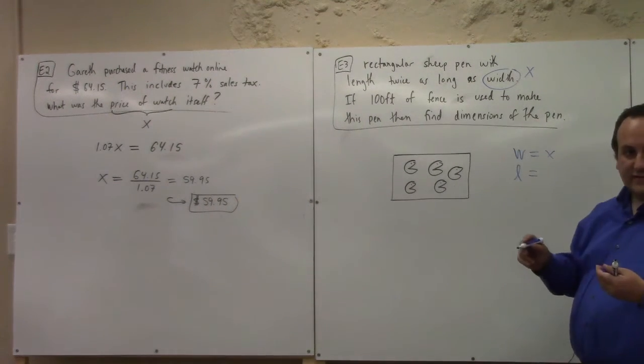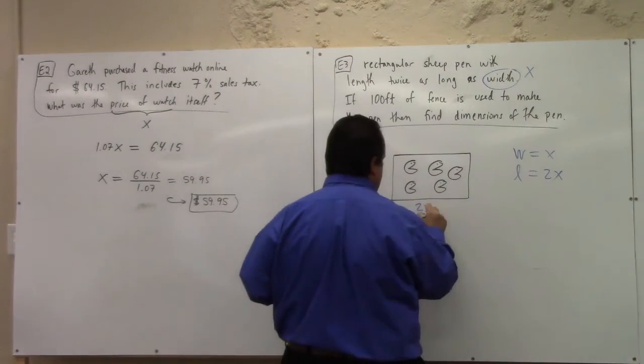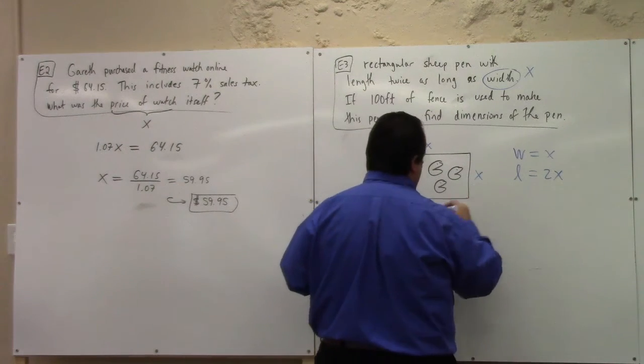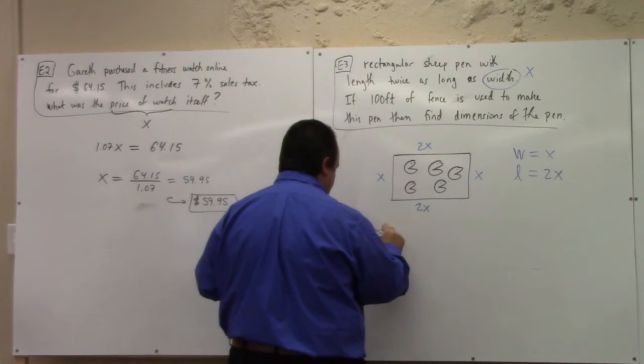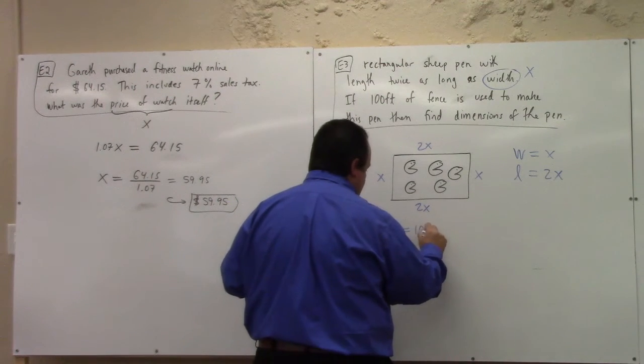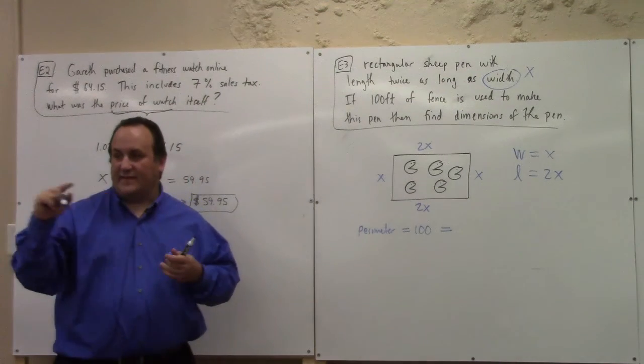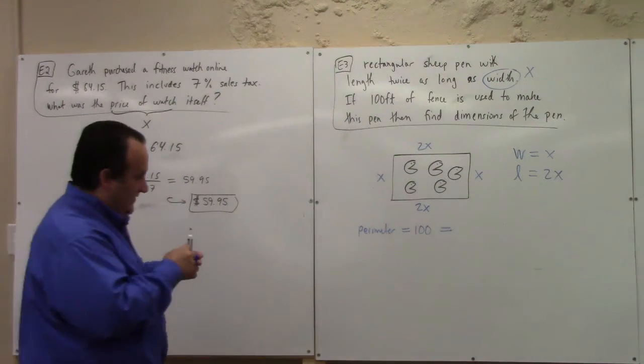So the width is equal to x. What's the length equal to? It's equal to 2x, right? So this is 2x, this is x, this is 2x, this is x. What's the perimeter? 100 feet, right? But also, what is it also? It's the sum of the lengths of the sides, right? So it's x plus 2x plus x plus 2x, right? 6x?